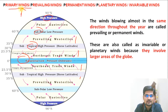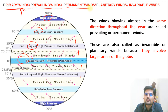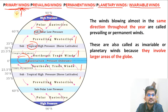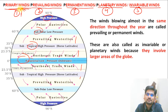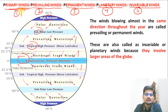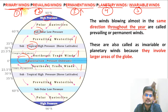Today we are going to learn about winds called primary winds, also called prevailing winds, permanent winds, planetary winds, and invariable winds — five names for the same wind. Four of these names start with P: primary, prevailing, permanent, planetary. And the fifth is invariable — so four P's and one I. They are called permanent because they blow in almost the same direction throughout the year. They are called planetary because they involve large areas of the planet — the tropical, temperate, and polar regions at the planetary scale.